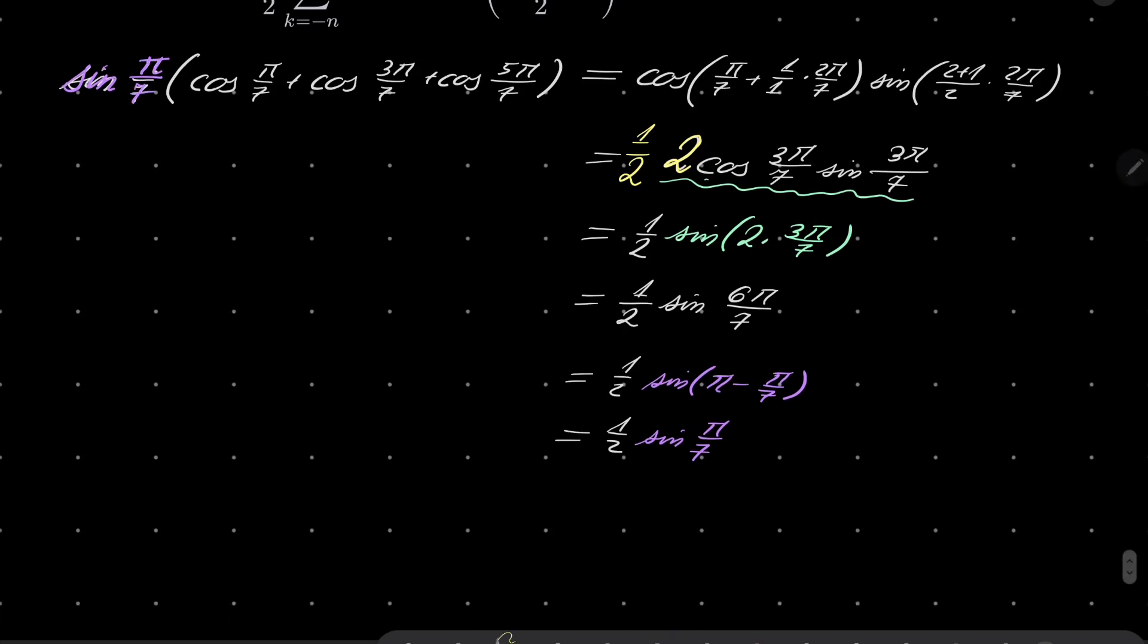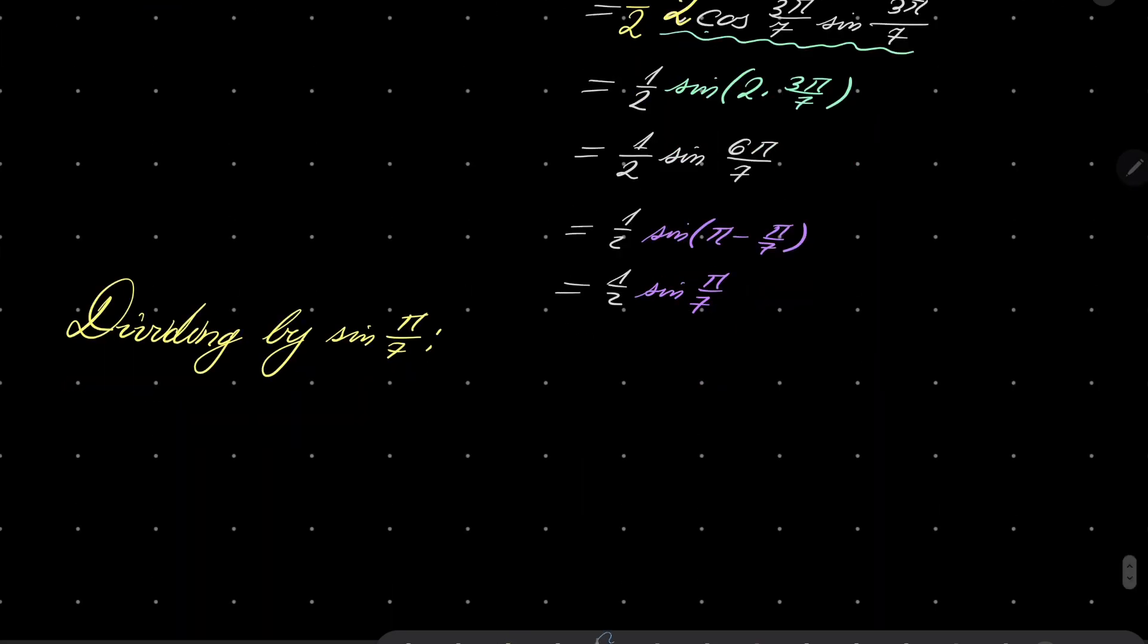Dividing by sine of pi over 7, and we get our result. We get that cosine of pi over 7 plus cosine of 3 pi over 7 plus cosine of 5 pi over 7 is indeed equal to one half, which closes the proof. It's exactly what we want.